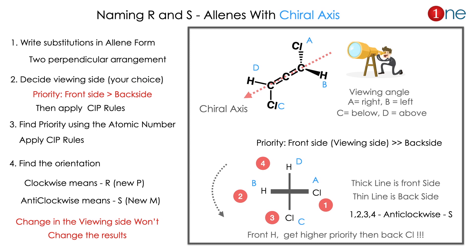The front side always gets higher priority than the back side. Here, front side is AB and back side is CD. Then you apply the CIP rule to the front side first. If the orientation is clockwise, it is R — the new name is P. If it is anticlockwise, it is S — the new name is M.